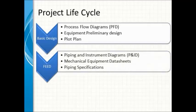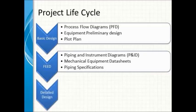In FEED, more details are added to the process flow diagrams — design conditions, line sizes for lines connected between equipment, and valves. At this point the document is no longer called a PFD; it becomes a P&ID, which is the piping and instrument diagram. Mechanical engineering will also have more details in their data sheets. Piping engineering will start to generate piping specifications, which are the guidelines for design. Once the piping specifications are generated, they can be loaded into the model and piping designers can start modeling.